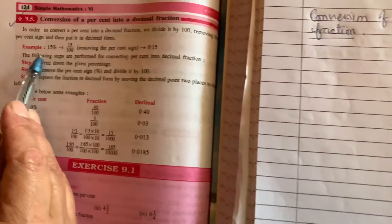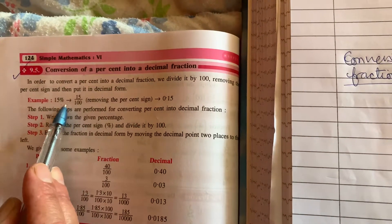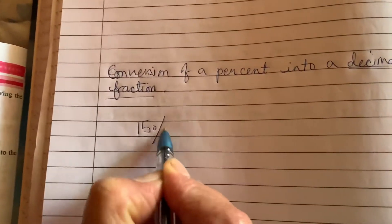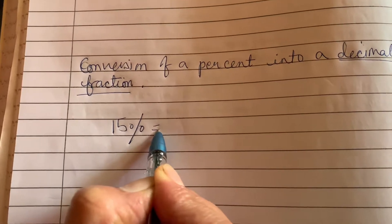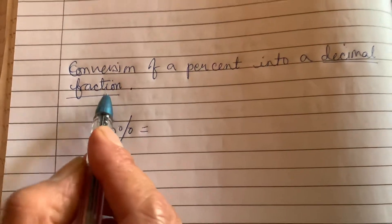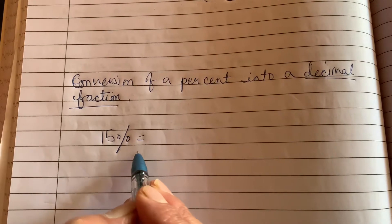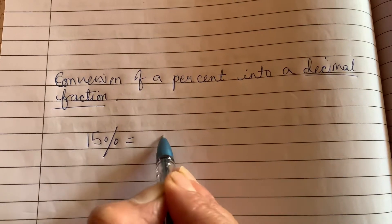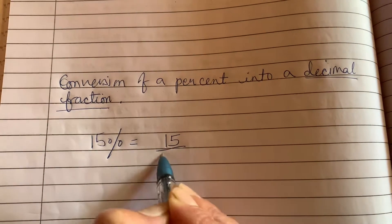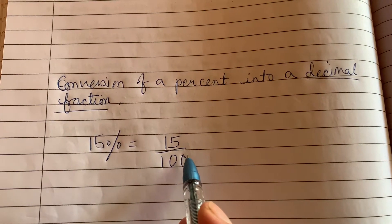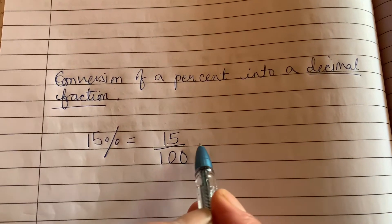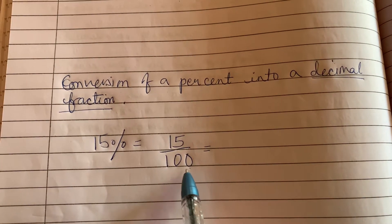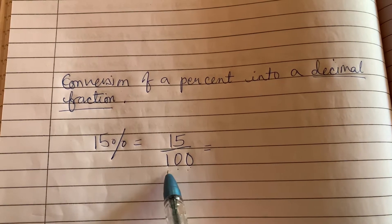So here is the example. I'm going to explain this example in the copy. 15 percent — this is in percent form and you have to express it into a decimal fraction. The first step is to change it into a fraction. We know percent means out of 100, so 15 percent is 15 over 100. Since the denominator is 100, this is the hundredths place, meaning two decimal places.